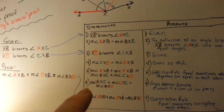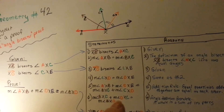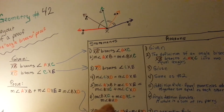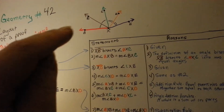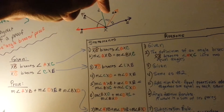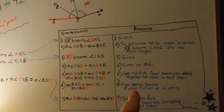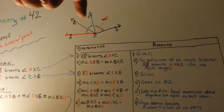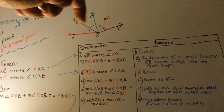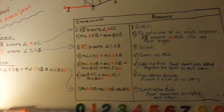Now we're at step 6. The measure of bxc — the brown and green — plus the measure of cxd — the orange and green — is equal to the measure of bxd — the brown and orange. We're saying that these two middle angles together equal that whole combined angle. Our reasoning is the angle addition postulate: the whole is the sum of its parts. We've determined that these two added together equal this entire larger angle.